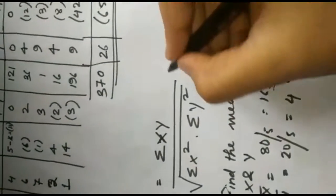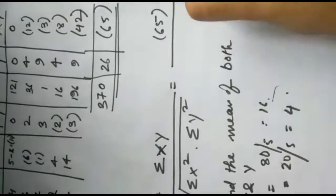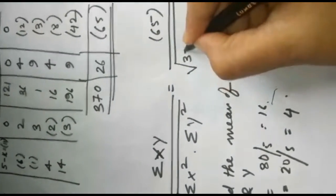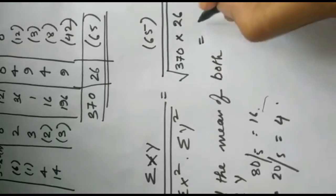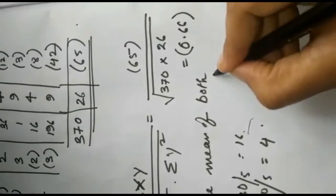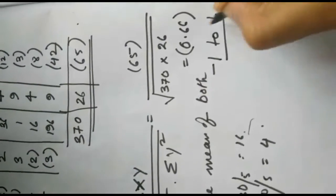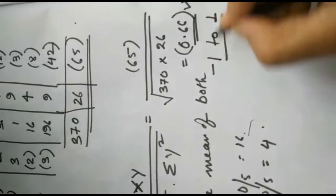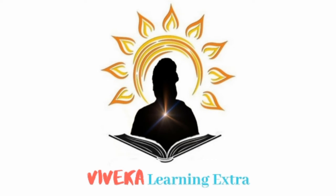So by substituting the value, we are going to get minus 65 divided by root over 370 into 26. We are going to get 0.66 in negative. So the correlation will lie between minus 1 to plus 1, and 0.66 is between minus 1 to plus 1.